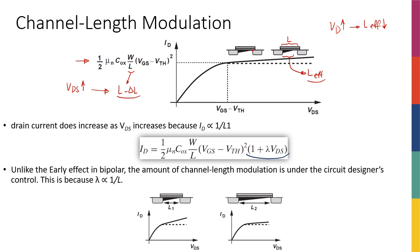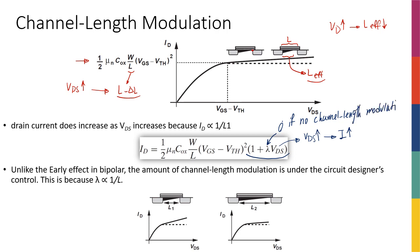So basically, if VDS increases, my current will increase. The proportionality is set by lambda. If I don't have any channel length modulation — similar to the BJT case with no early effect — then lambda is zero, and I go back to my original equation (1 + 0 = 1).